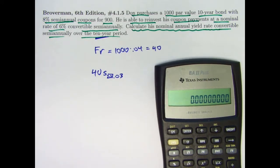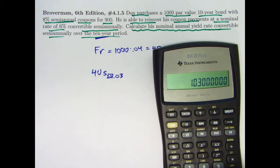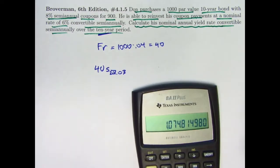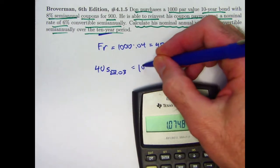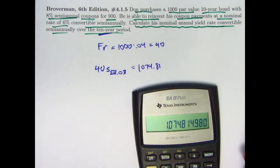So take 1.03, raise it to the 20th power, subtract 1, divide by 0.03, multiply by 40. This amount is 1074.81. Let me round it. And I think I will just go ahead and round it there like that.